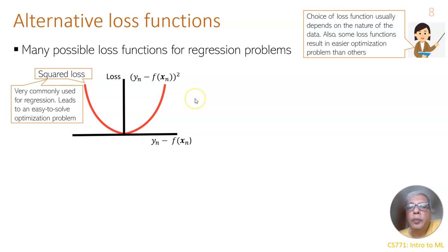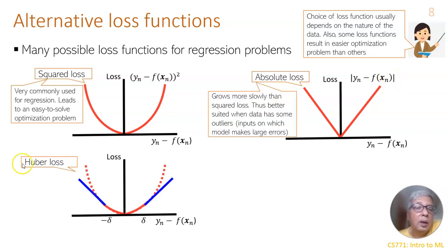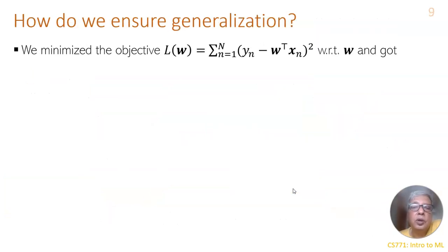This is squared error loss. There could be many other losses like absolute deviation modulus of yn minus f(xn), there are several other losses, Huber loss, then Vapnik loss. That is up to our choice which loss to use.